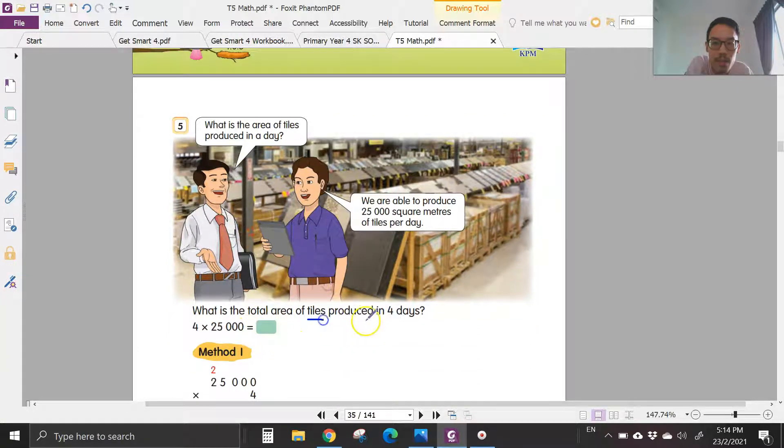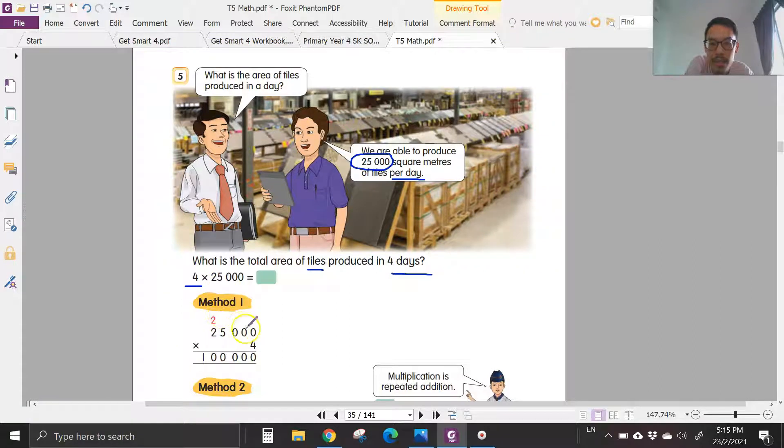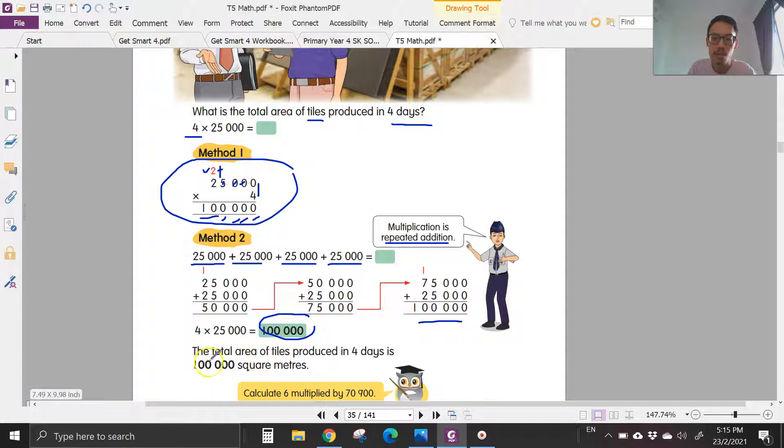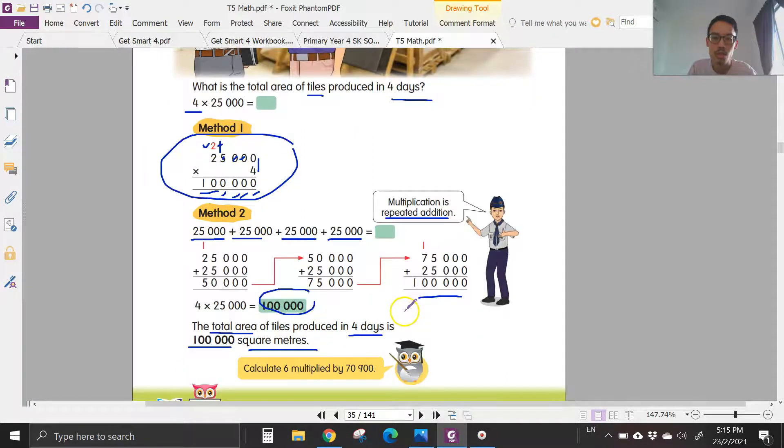What's the total area of tiles produced in four days? 25,000 square meters per day. So four days times four. 4 times 25,000. Method number two, you can add: 25,000 plus 25,000 plus 25,000 plus 25,000, you get 100,000. This is called repeated addition. You will get the same answers. So total area in four days is 100,000 square meters.